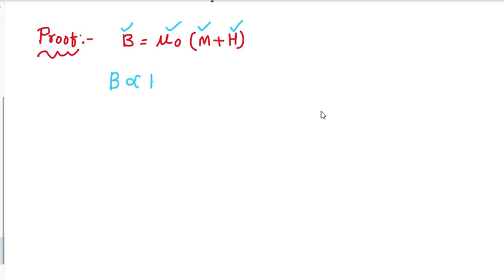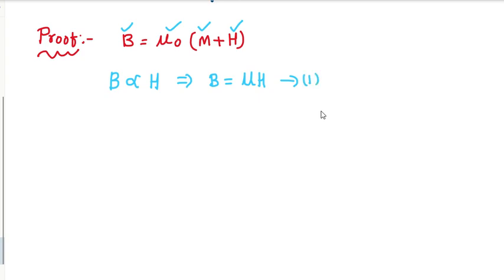We know that the magnetic flux density B is directly proportional to the applied magnetic field intensity H. That means if you are increasing the magnetic field intensity, the magnetic conduction increases. From that, B equals mu into H. We can call this equation number one.